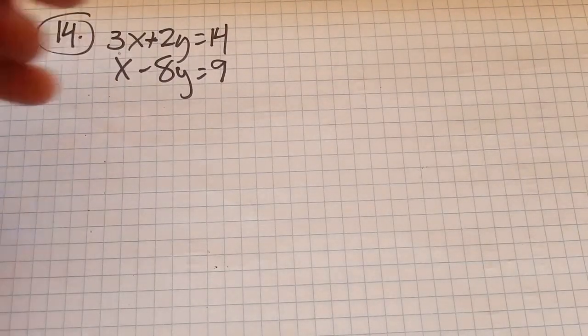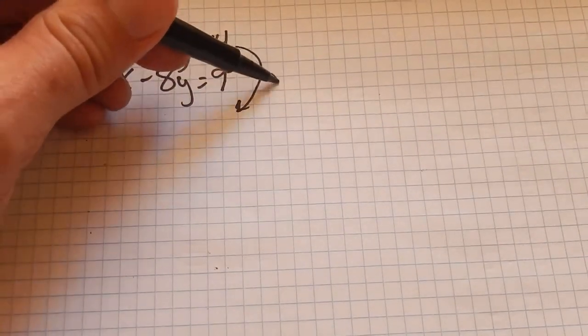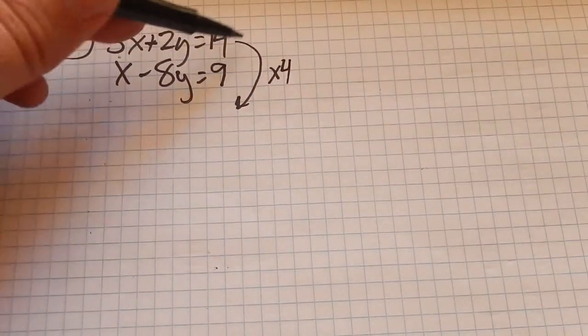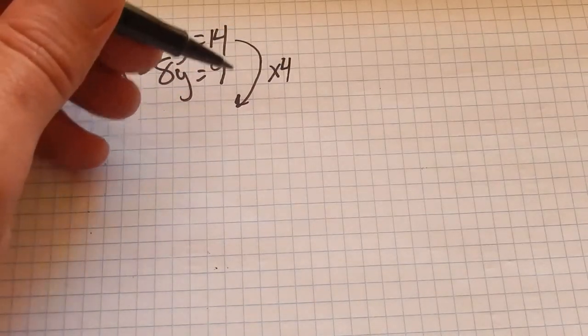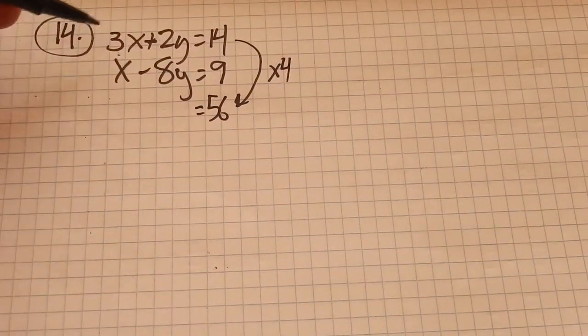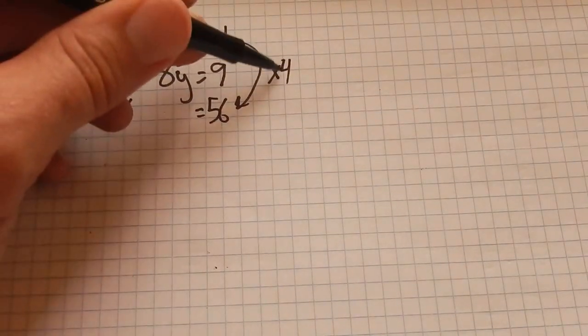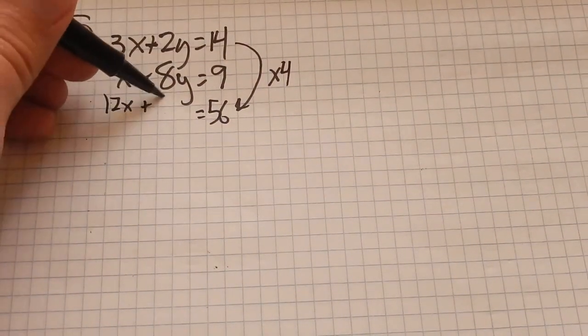Notice I have a positive 2y and a negative 8y. If I were to multiply this whole equation by 4, like both sides are getting multiplied by 4. So, 4 times 14 is 56. 4 times 3x is 12x. 4 times 2y is 8y.